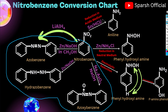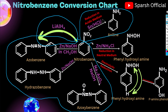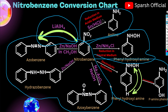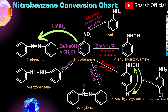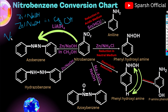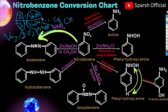First, we look at reduction in neutral medium, then electrolytic reduction. Moving to alkaline medium reduction: the reagents include zinc with NaOH in methanol, Na3AsO3 with NaOH. These are the common alkaline medium reagents. Whenever you see NaOH with something, it indicates alkaline medium. Zinc can be used three times, and Na3AsO3 is used similarly. Methanol is an exception case here.